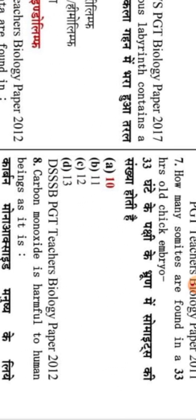The next question is: how many somites are present in a 33-hour-old chick embryo? Somites are segments or blocks in developmental biology that can be counted in embryo slides. In a 33-hour-old chick embryo, the somite count is used to assess developmental stage. The answer in this context is 10 somites.